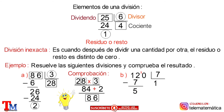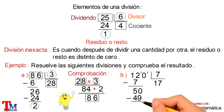Como este valor es menor que el divisor, seleccionaremos la siguiente cifra del dividendo, que sería el 0. Un número que multiplicado por 7 se acerque al 50 sería el 7, que multiplicado por 7 es igual a 49. Lo ubicaremos debajo del 50 y procedemos a restar ambos valores, obteniendo como resultado 1. Como este valor es menor que el divisor y no hay más cifras en el dividendo que seleccionar, entonces la división concluye en este paso.